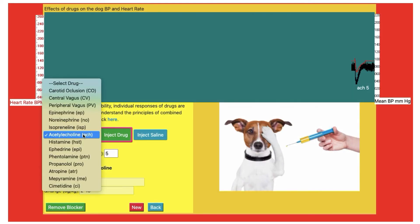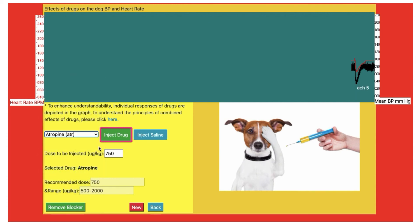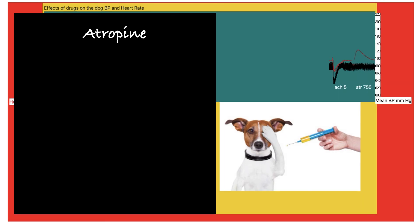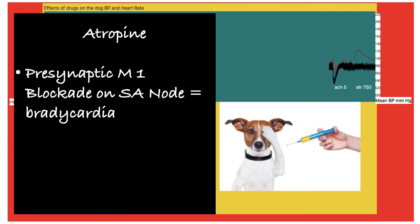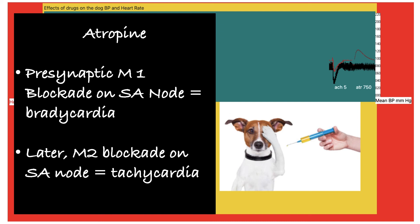Now we will see the parasympathetic or anticholinergic drug — atropine. Select and inject. Atropine causes no change in blood pressure but heart rate is increased. Atropine is an anti-muscarinic agent that blocks muscarinic receptors. By blocking the presynaptic M1 receptor on the SA node, it results in tachycardia, and later M2 blockade on the SA node by atropine also leads to tachycardia.